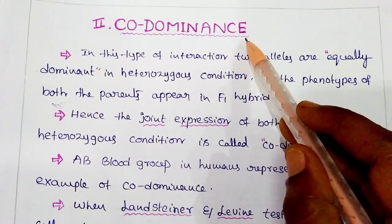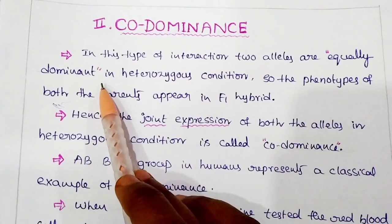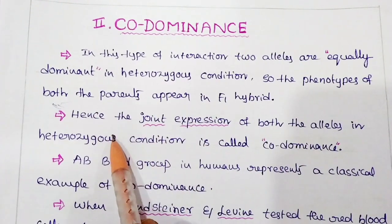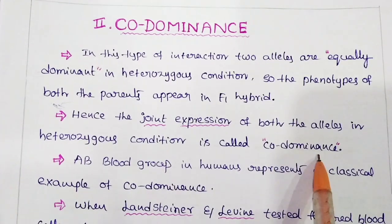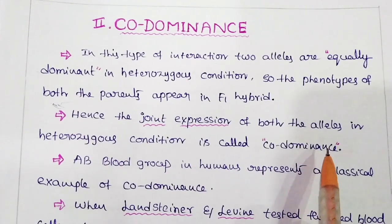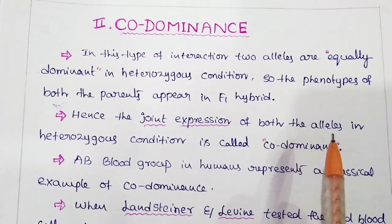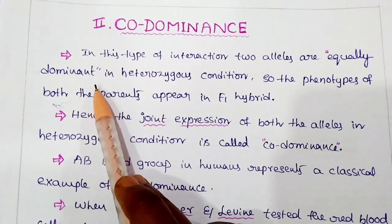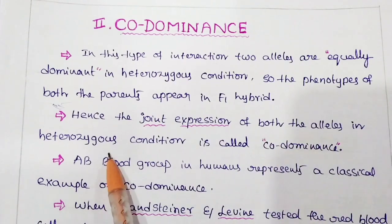Codominance is also an exception to Mendelian inheritance. In this type of interaction, two alleles are equally dominant in heterozygous condition, so the phenotypes of both parents appear in the F1 hybrid. Hence, the joint expression of both alleles in heterozygous condition is called codominance. Remember, in the previous video we discussed incomplete dominance, where the dominant allele could not completely dominate the recessive allele. Here the condition is different — both alleles are equally dominant and show joint expression in heterozygous condition.